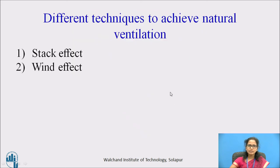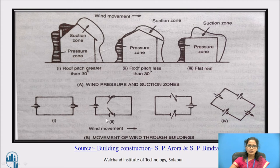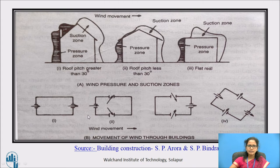There are different techniques to achieve natural ventilation: the stack effect and the wind effect. The wind effect: ventilation systems are affected by pressure differences due to the velocity of the wind. When the wind blows, pressure differences are created — positive pressure on the windward side and negative pressure on the leeward side. When wind pressure blows at 90 degrees, positive pressure is created on the windward side and negative pressure on the leeward side.